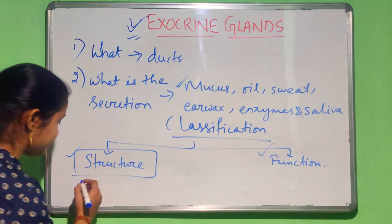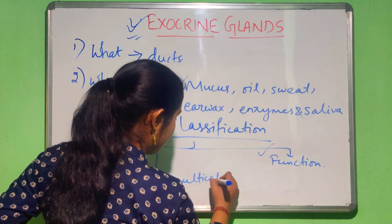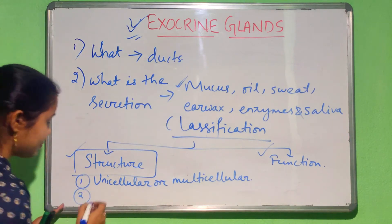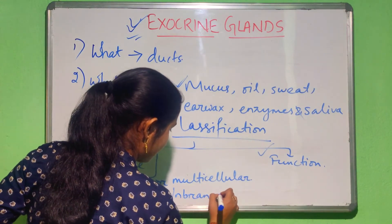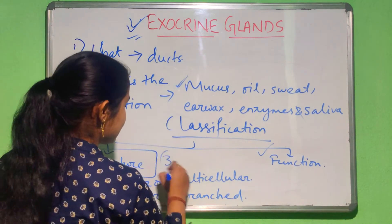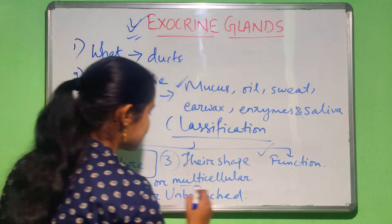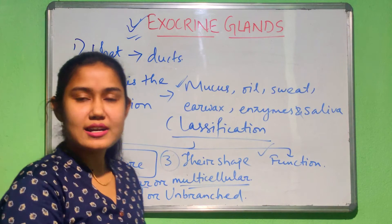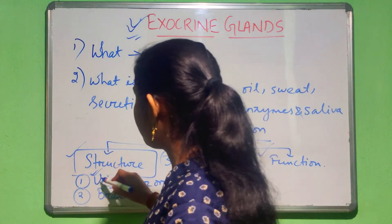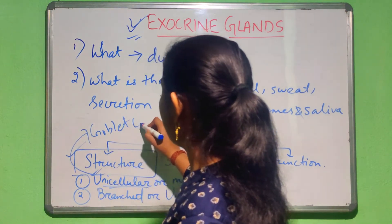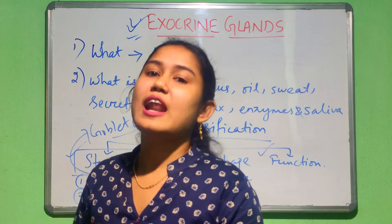Considering the structural classification, they can be unicellular or multicellular. Then they can be branched or unbranched. And the third criterion is their shape. First, unicellular glands: as the name suggests, these are made up of only one cell — a single cell. The example is the goblet cell. These goblet cells release their secretion on the apical surface of the lining epithelium.